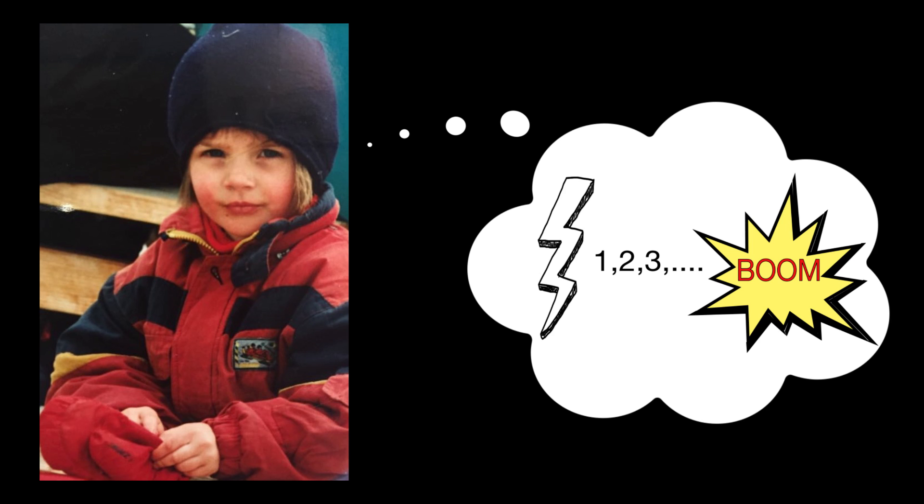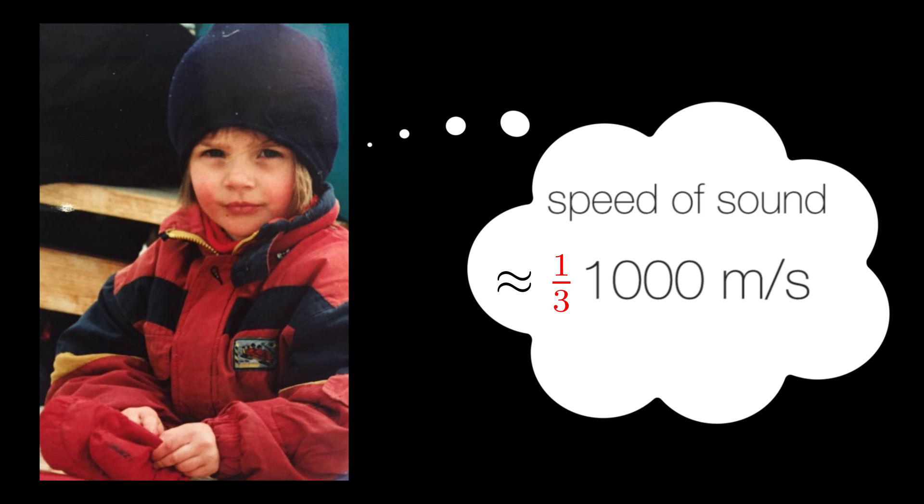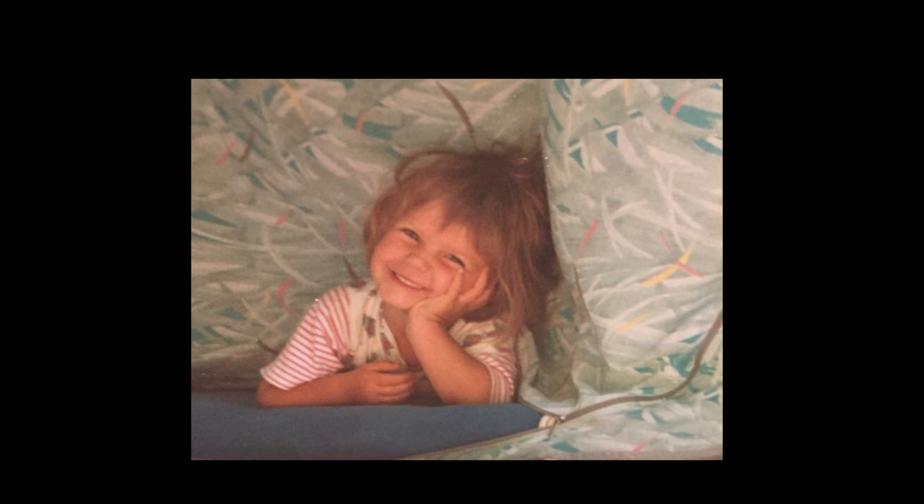When I was a child, I believed that the seconds between a lightning and the thunder corresponded to the kilometers the thunderstorm was away. Well, that would mean that the noise made by the thunderstorm would travel at 1000 meters per second. Now I know that the sound travels through air at about a third of that speed. Well, at least I felt safer when I was little.